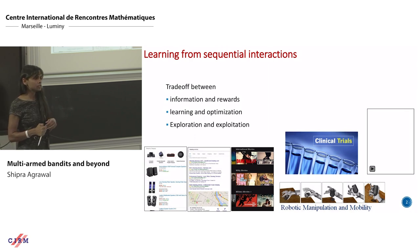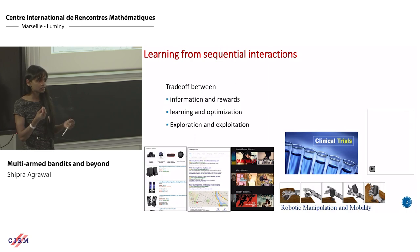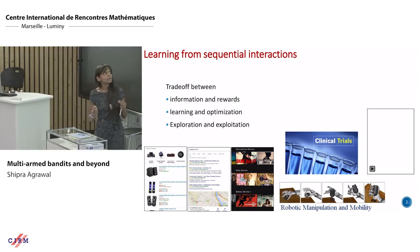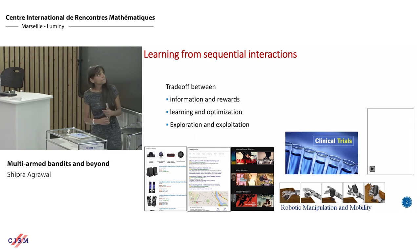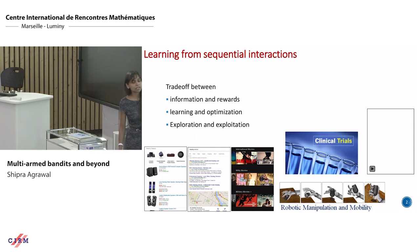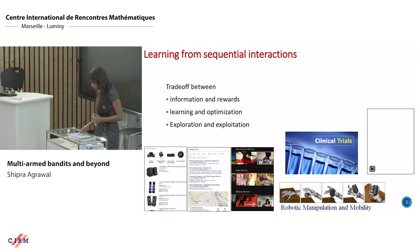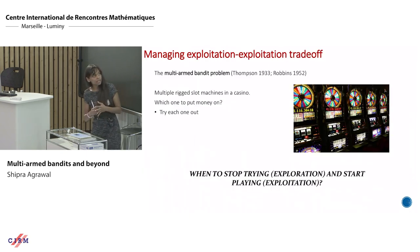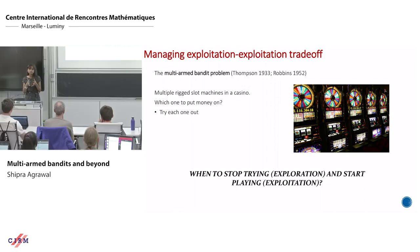The multi-armed bandit problem, and more generally reinforcement learning, always deals with this tradeoff: how to balance between learning and optimization, learning from data versus optimizing decisions — what we call technically exploration versus exploitation: whether to use your decision to explore the space of outcomes, or to exploit your learning so far and optimize the immediate solution. This appears in many different applications where sequential interactions occur and users provide online feedback.